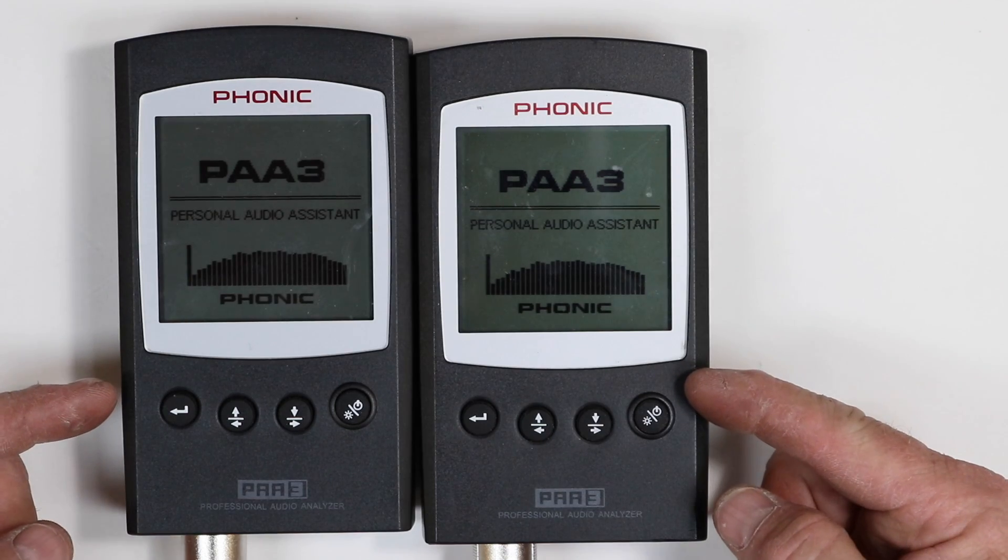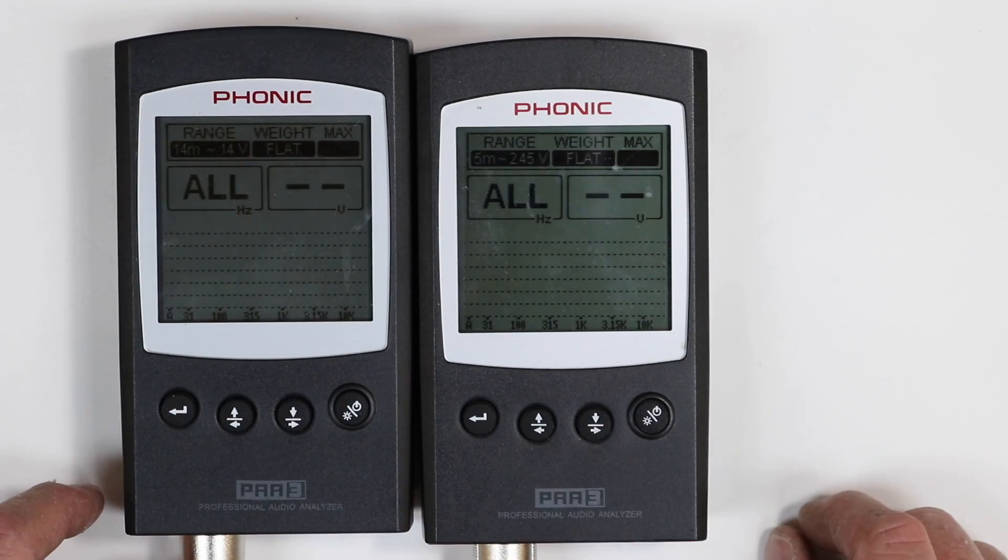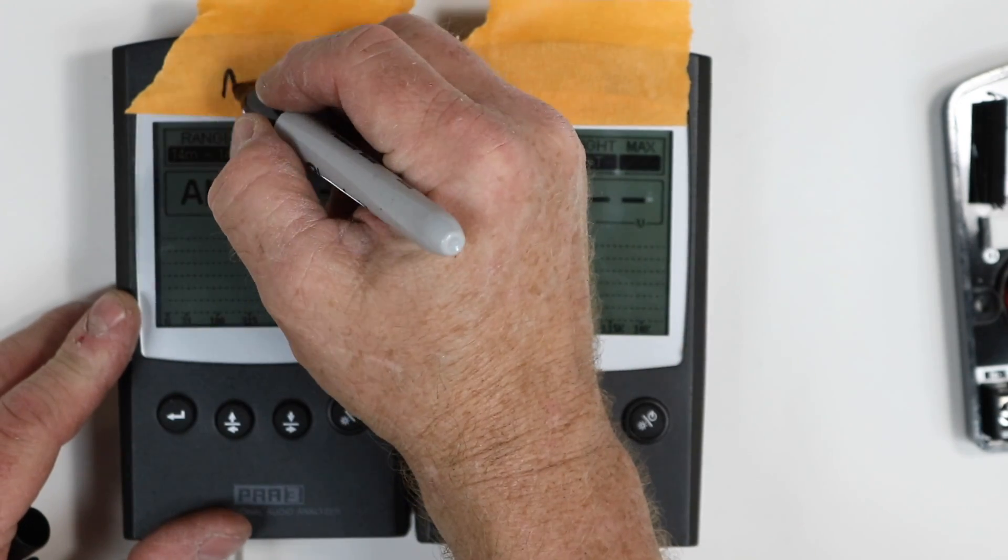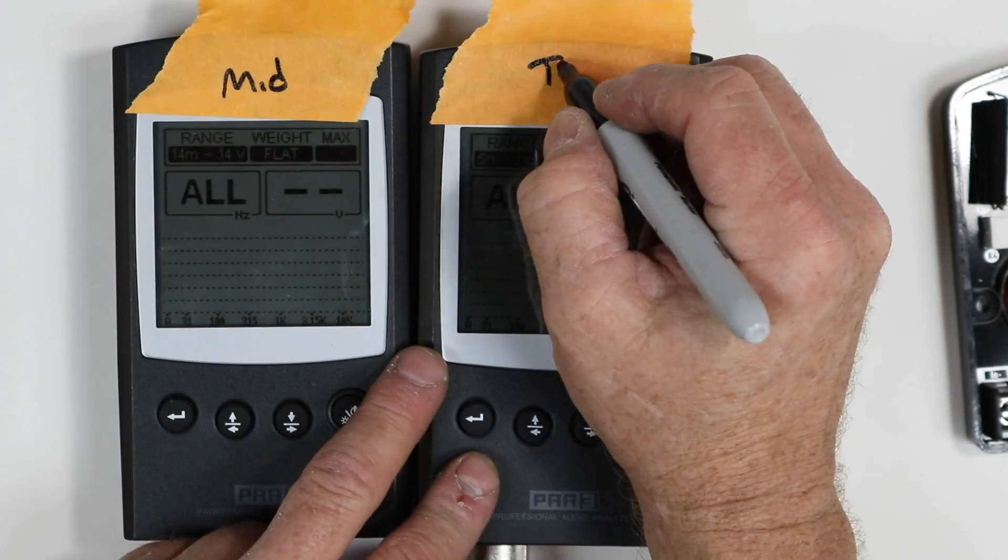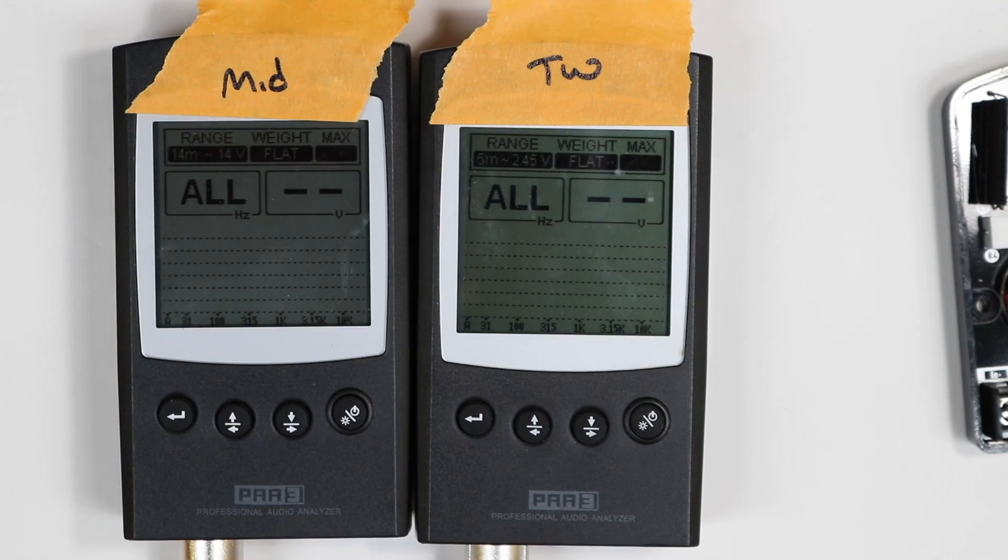These are RTAs. They're going to give us a visual representation of what the audio is doing. Now, this crossover is a two-way, so it has a mid and a tweeter. So we want to be able to see which one of these is which.